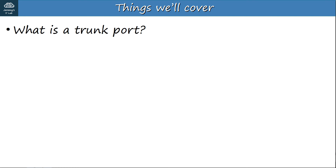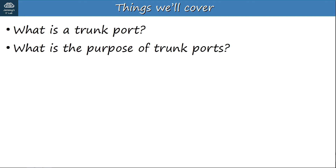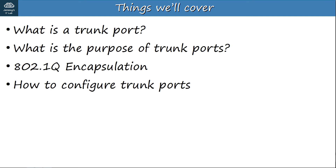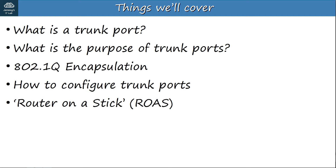Let's take a look at what we'll cover. First, what is a trunk port? Whereas an access port belongs to a single VLAN, trunk ports carry traffic from multiple VLANs on a single interface. Next, we'll discuss the purpose of trunk ports and 802.1Q encapsulation — a tag added to an Ethernet frame to identify which VLAN traffic belongs to on a trunk. Then trunk port configuration, and finally router on a stick, a more efficient way of performing inter-VLAN routing.